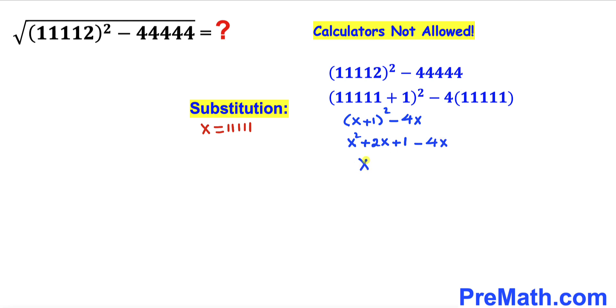Therefore this could be written as x² - 2x + 1. Now let's recall another identity. If I call this a as x and this b as 1, then this could be written as (x - 1)². But we know our x value is 11111, so I'm going to replace this one over here.